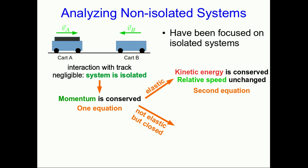Alternatively, if it isn't elastic but it's closed and we know something about how the internal energy changes, then we can use the fact that the total energy is conserved, or alternatively if we know the coefficient of restitution we can use that, and either way again we have a second equation. And we like equations. We can solve for unknowns using them.